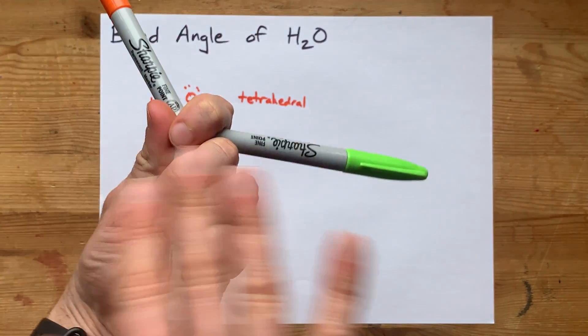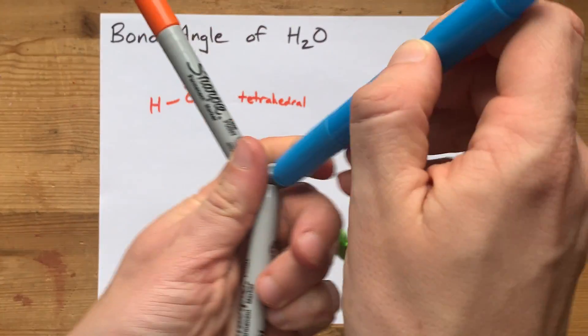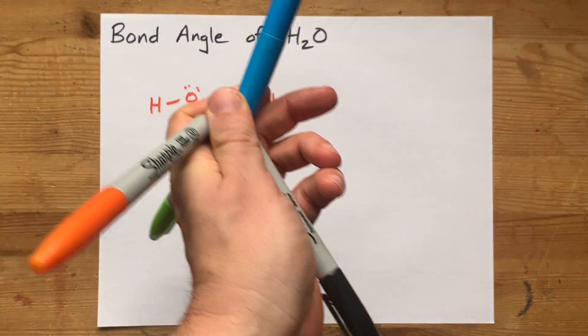Tetrahedral is kind of like if you took trigonal planar and added a fourth thing on top to point them downwards.